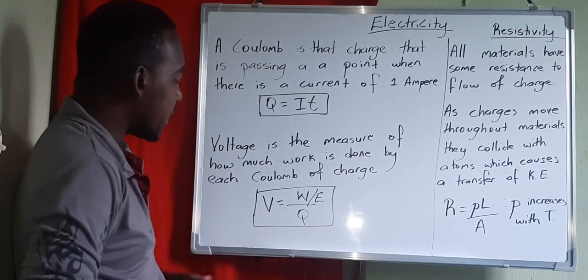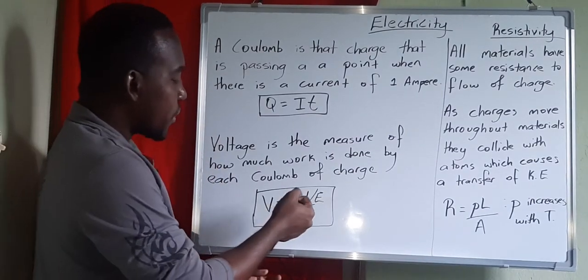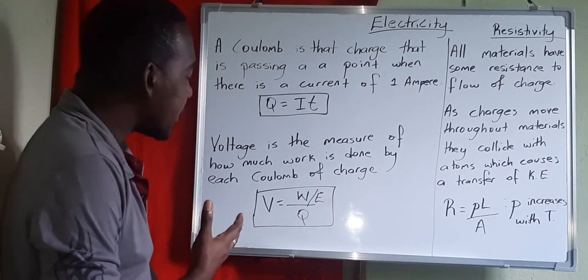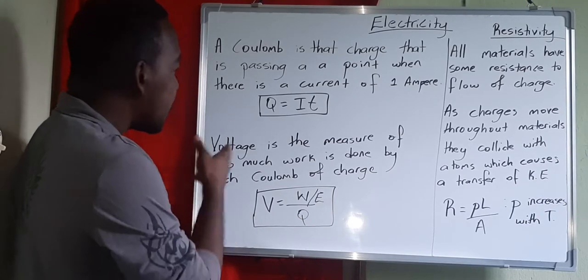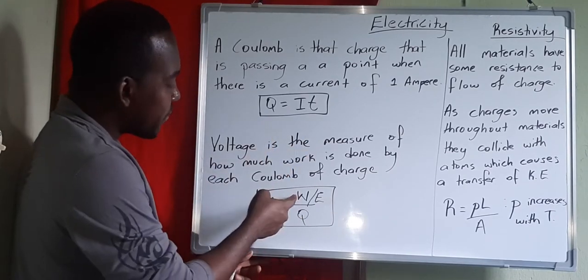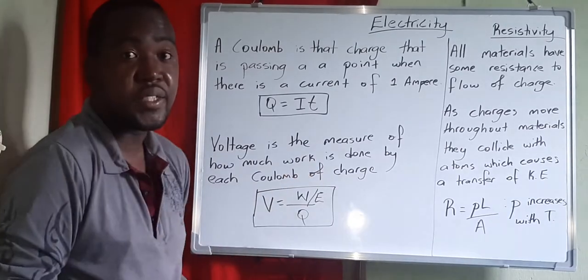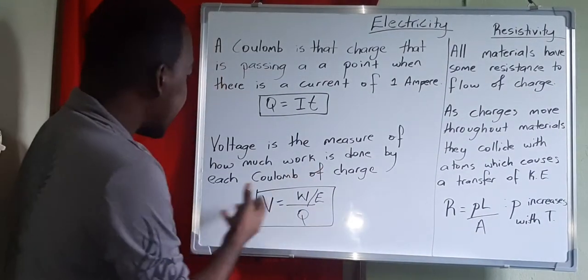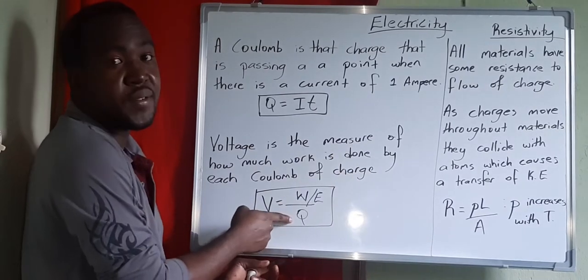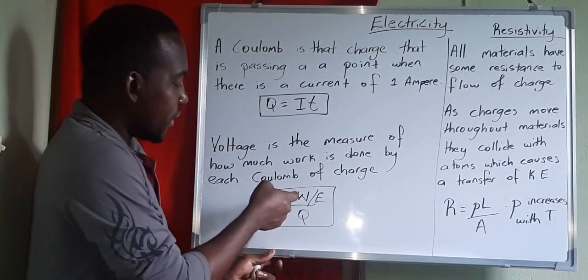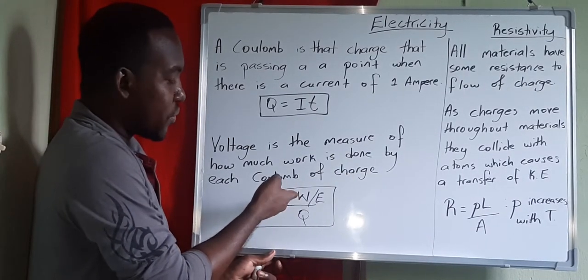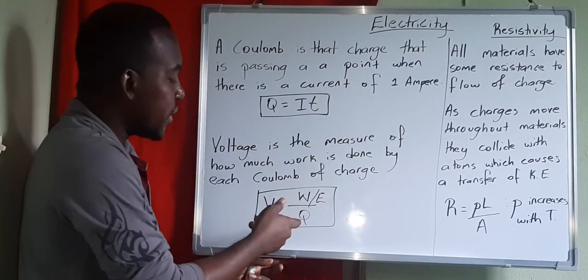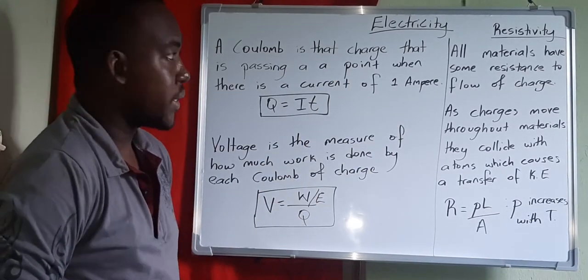Voltage is work or energy over charge. Voltage is the measure of how much work, or energy, is transferred by each coulomb of charge — since it's divided by charge. It's the amount of energy transferred by every charge.